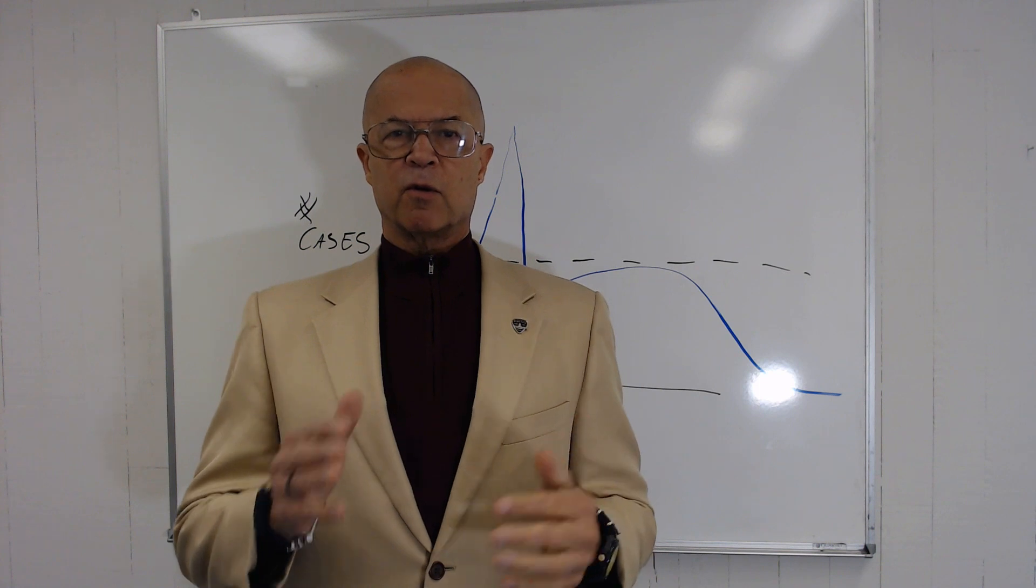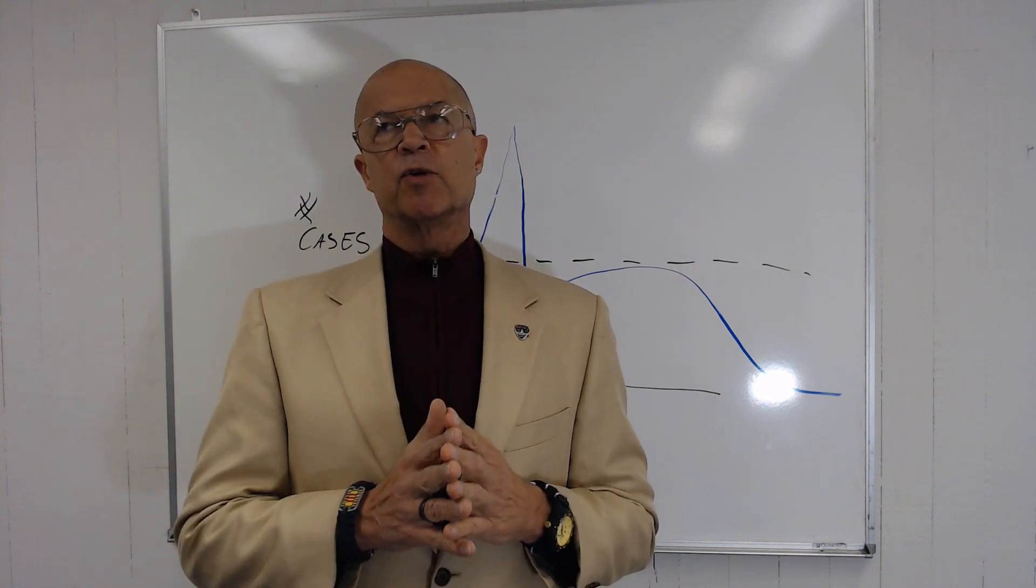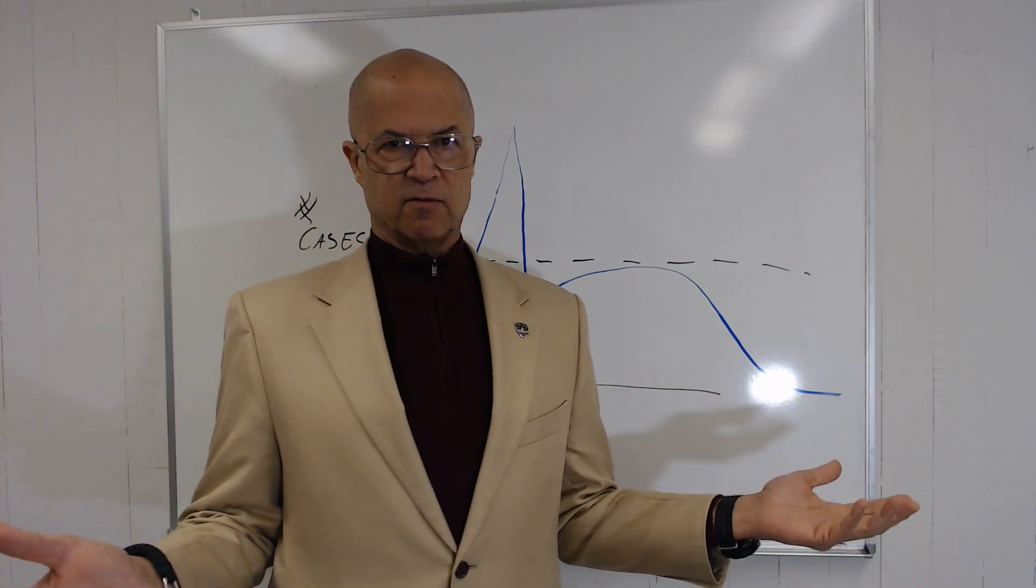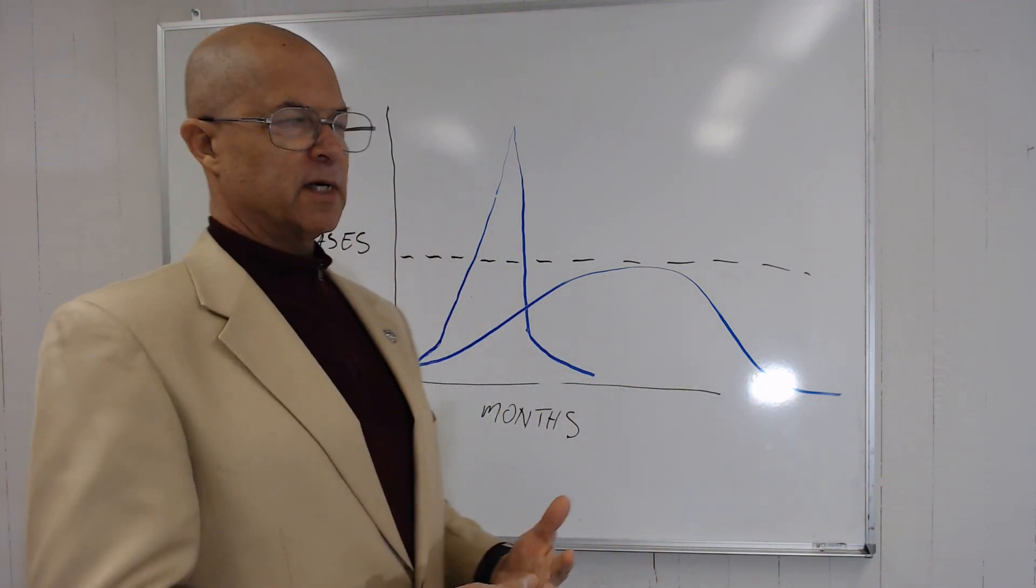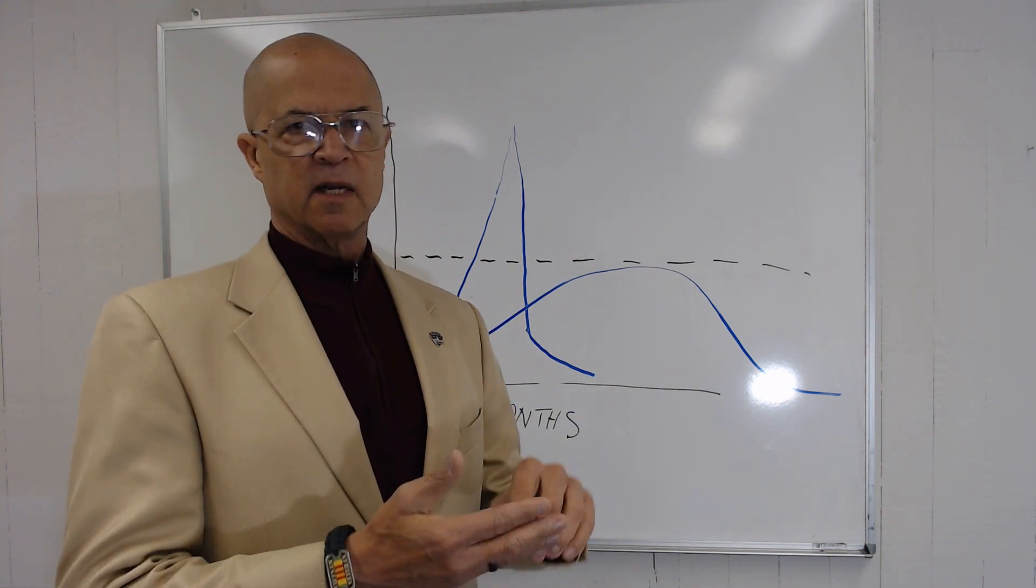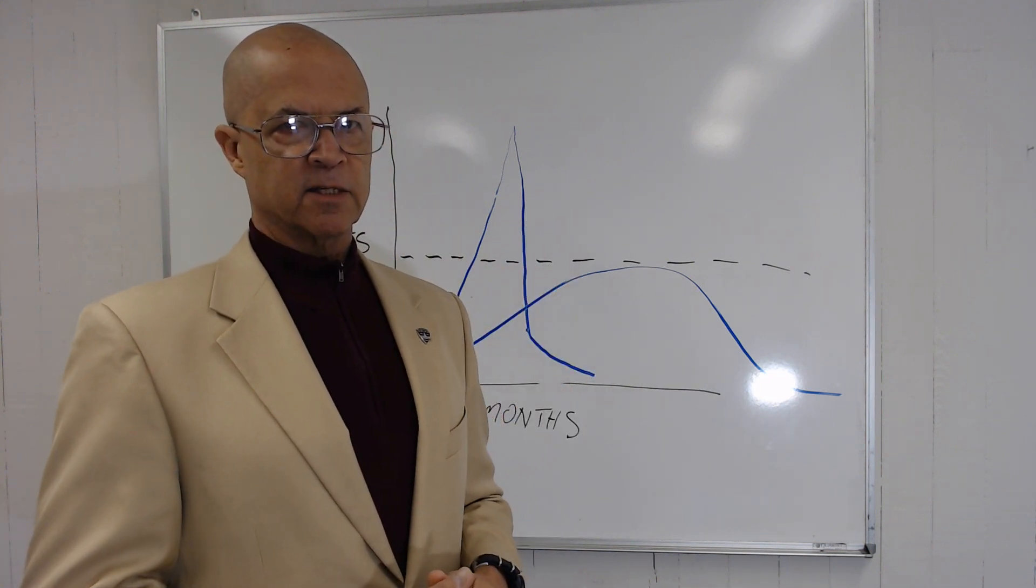Right? So you've heard the term flatten the curve. So what can you do to avoid the spike? Well, you do all kinds of things, right? Stay at home, shelter in place, don't be around crowds, more than 25 people. The list goes on.